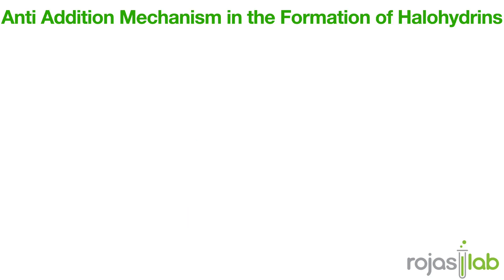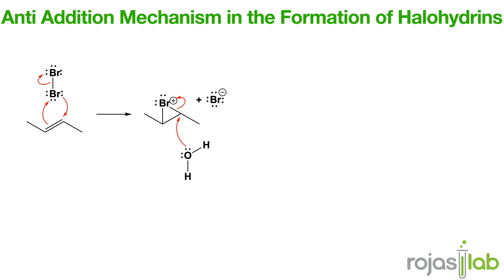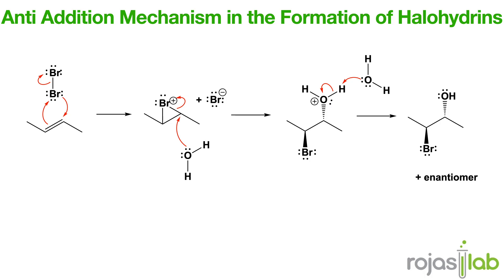Let's talk about halohydrin formation. This reaction is an addition of halogen and water to an alkene to form a halohydrin. In the mechanism, the alkene first reacts with the halide to form a halonium ion. From here, water attacks the more substituted carbon. Next, deprotonation gives us our final product — the halohydrin. Key points: this always results in anti-addition, and you typically get Markovnikov orientation for the hydroxyl group.